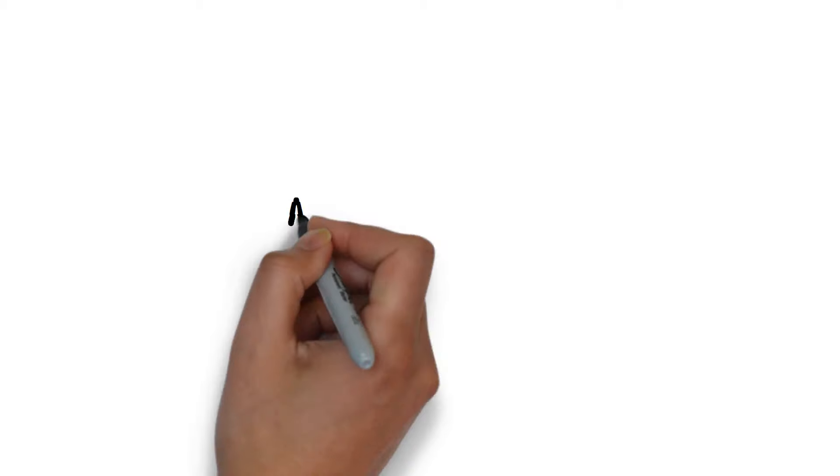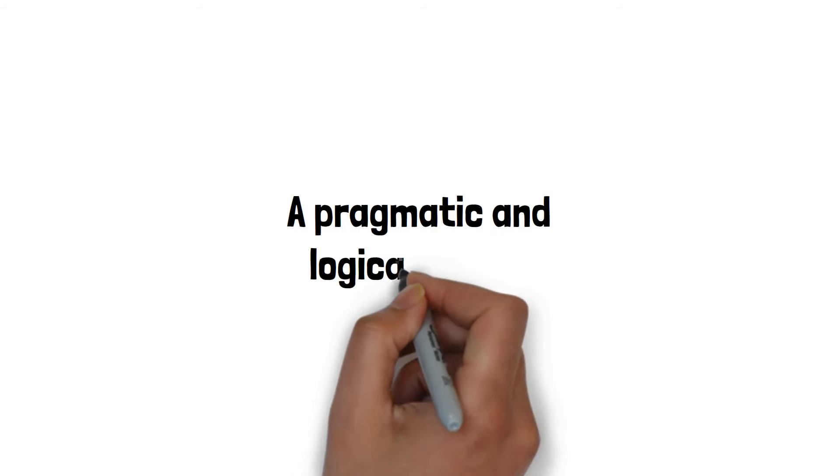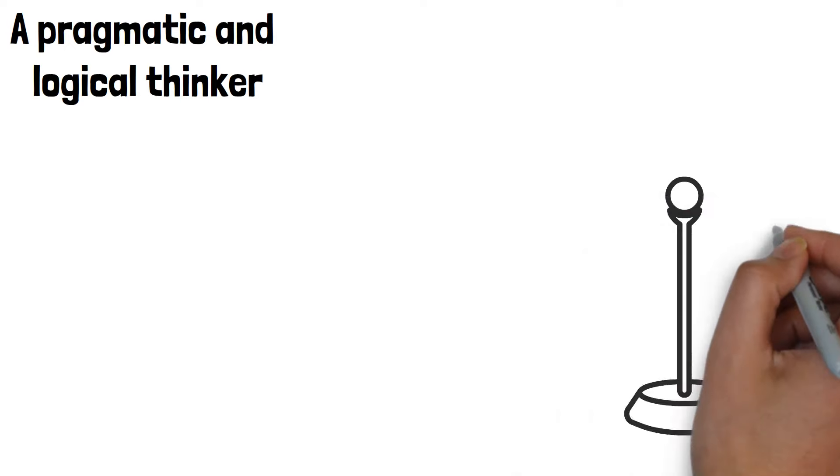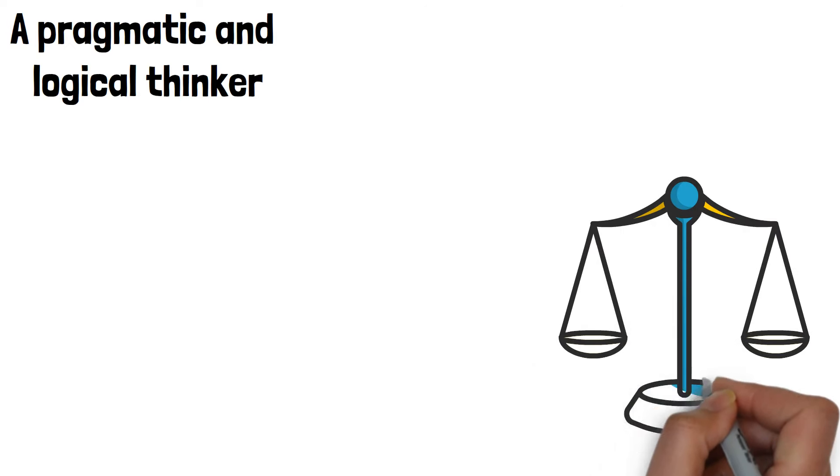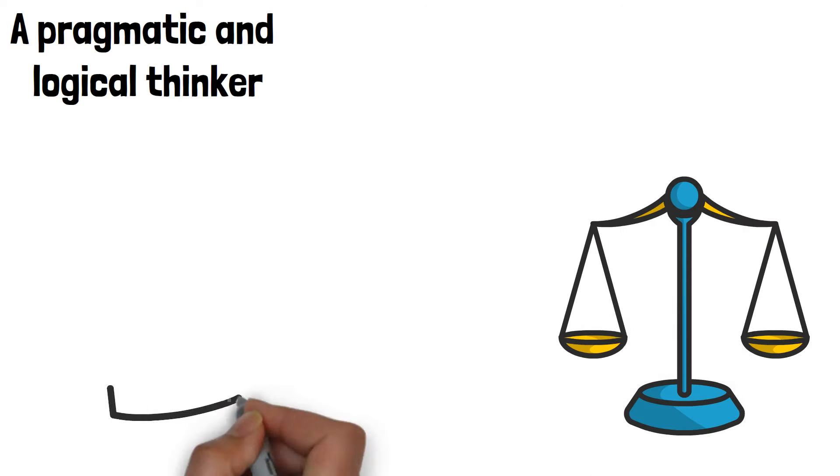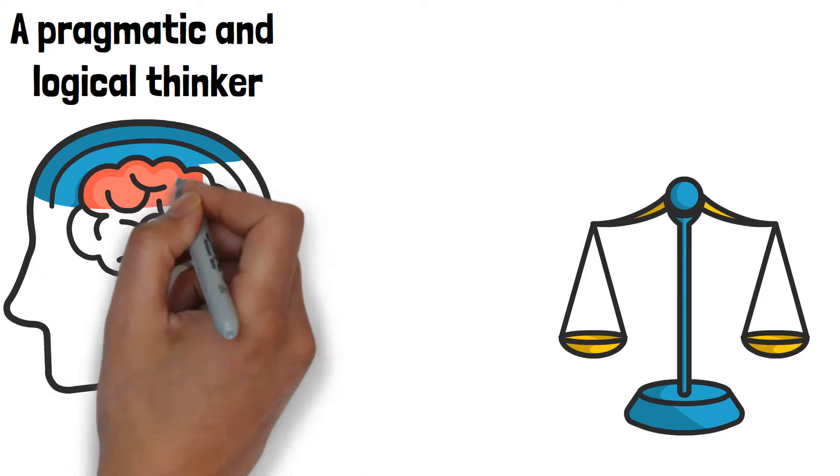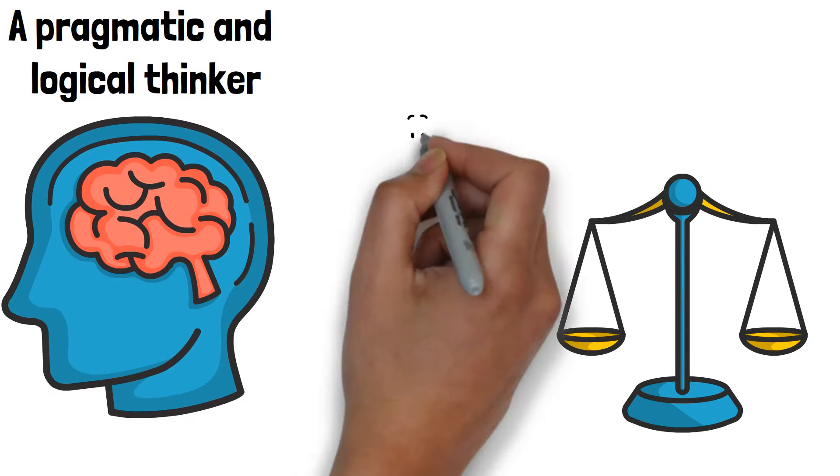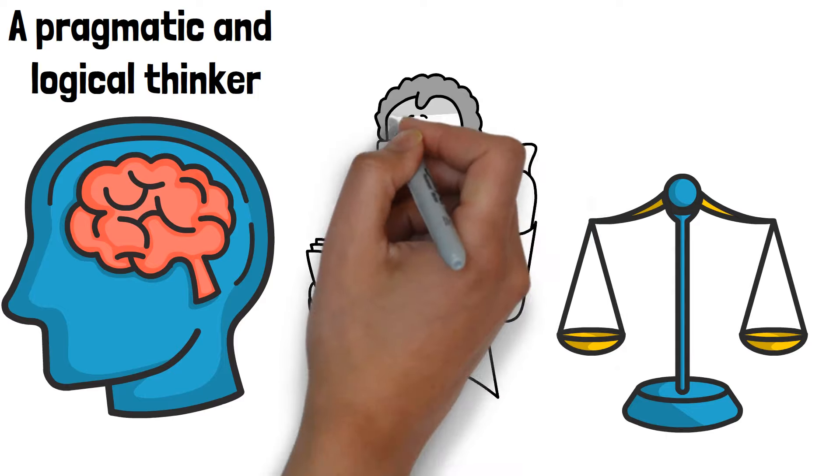No slant or vertical writing might indicate a pragmatic and logical thinker. If your writing is straight up and down, it shows that you are balanced and objective. You likely approach situations with a clear mind and make decisions based on logic rather than emotion. This kind of handwriting reveals a person who is practical and level-headed.